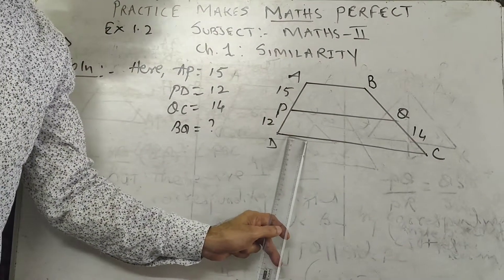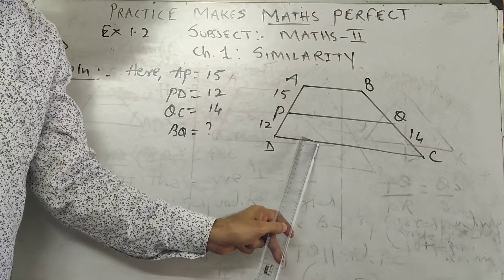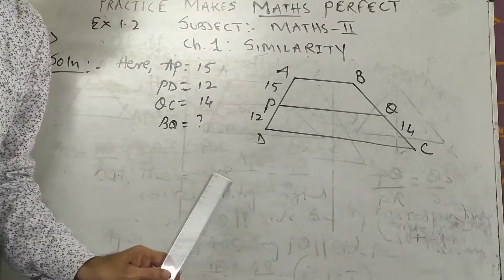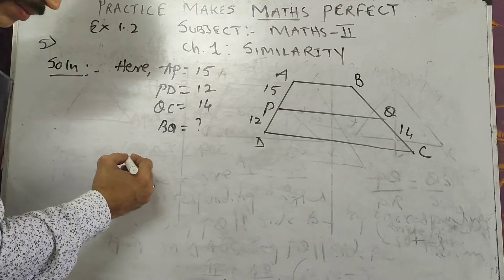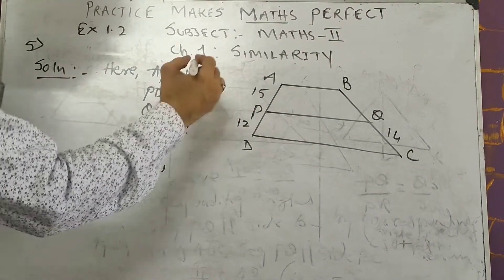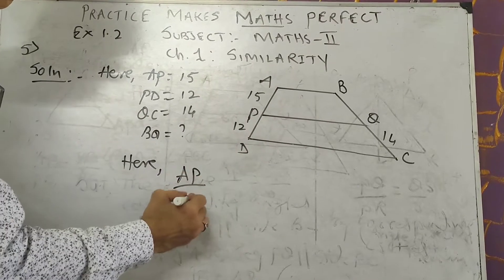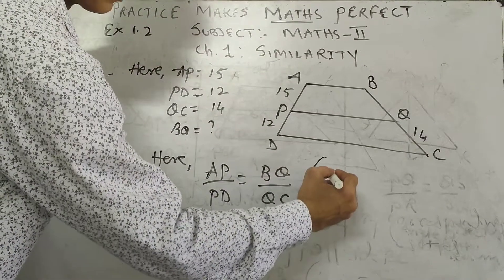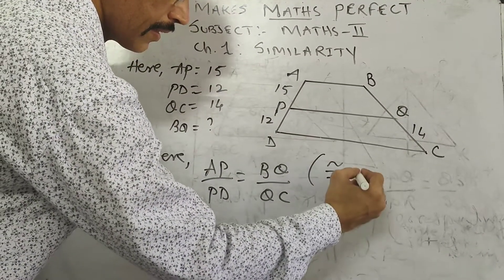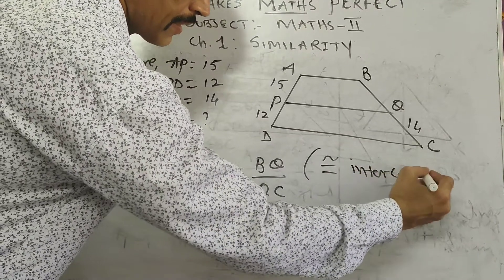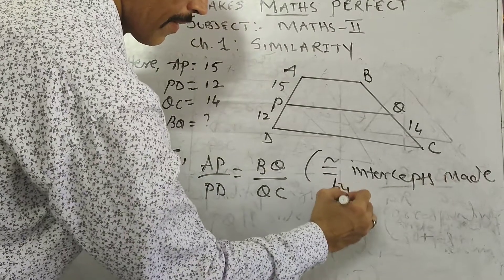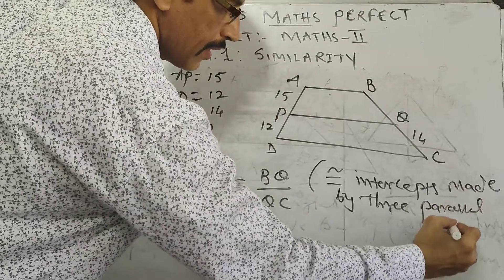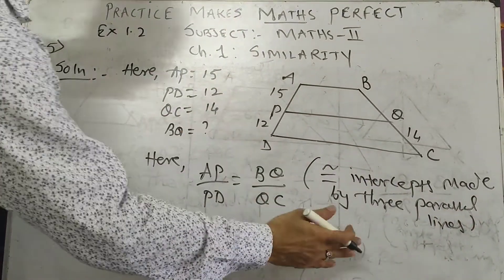The diagram shows three parallel lines — a very easy sum. AP is given as 15, PD is 12, QC is 14, and we have to find BQ. By intercepts made by three parallel lines: AP upon PD is equal to BQ upon QC. Reason: intercepts made by three parallel lines.